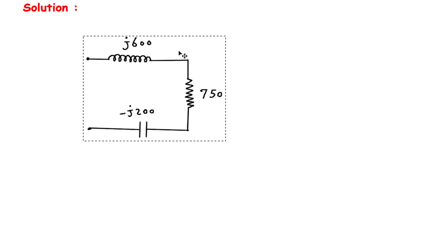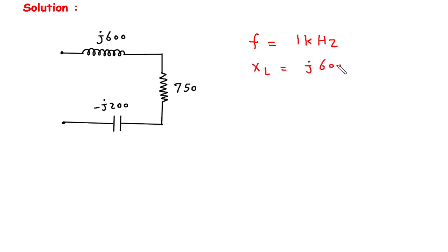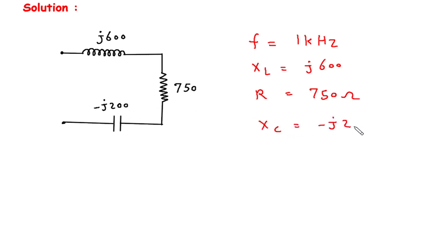Solution. First of all we will redraw the circuit. The value of frequency is given: F is equal to 1 kilohertz. Here we can see this is the value of XL — XL is equal to J600. This is the value of R — R is equal to 750 ohm. And this is the value of XC — XC is equal to minus J200.